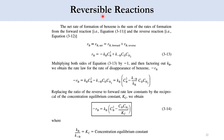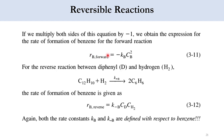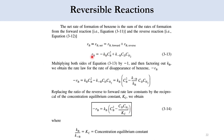Writing the total net rate: R_B(net) = R_B(forward) + R_B(reverse). R_B(forward) = -K_B · C_B², and R_B(reverse) = K_{-B} · C_D · C_{H₂}. So accordingly: R_B = -K_B · C_B² + K_{-B} · C_D · C_{H₂}.